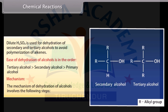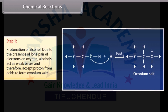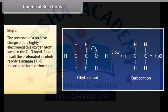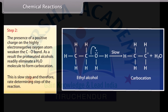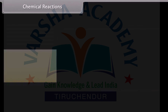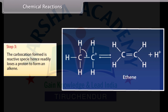The mechanism of dehydration of alcohols involves the following steps. Step 1: Protonation of alcohol. Due to the presence of lone pair of electrons on oxygen, alcohols act as weak bases and therefore accept a proton from acids to form oxonium salts. Step 2: The presence of a positive charge on the highly electronegative oxygen atom weakens the C-O bond; the protonated alcohol readily eliminates a water molecule to form a carbocation. This is the slow, rate-determining step. Step 3: The carbocation formed is a reactive species and readily loses a proton to form an alkene.